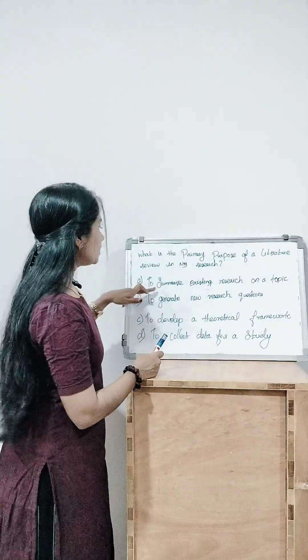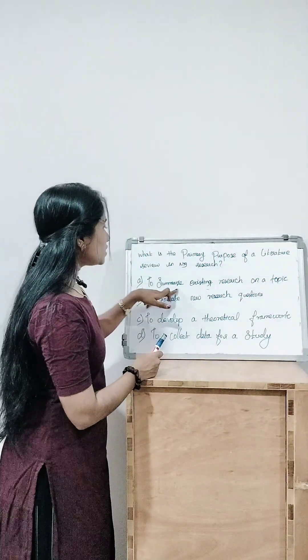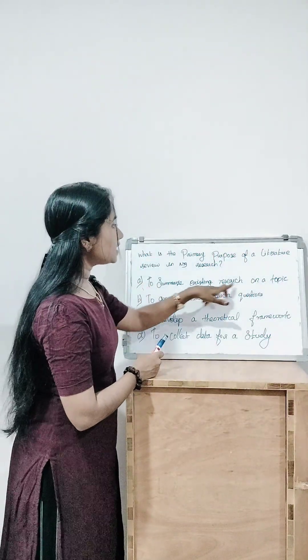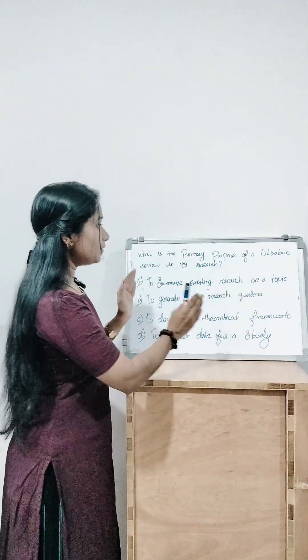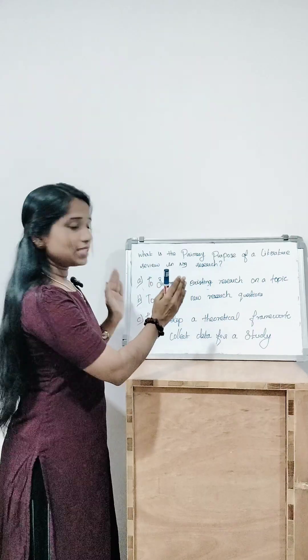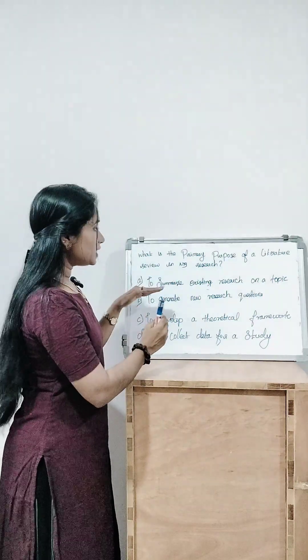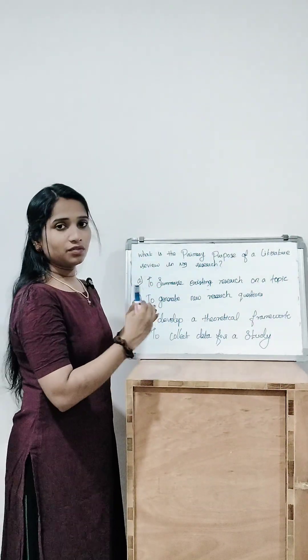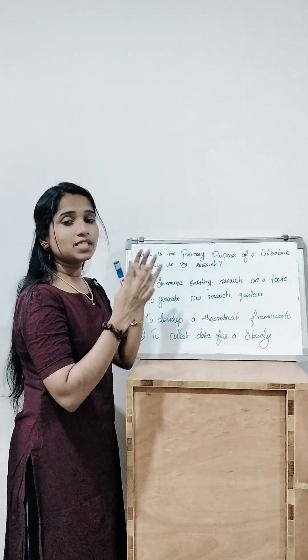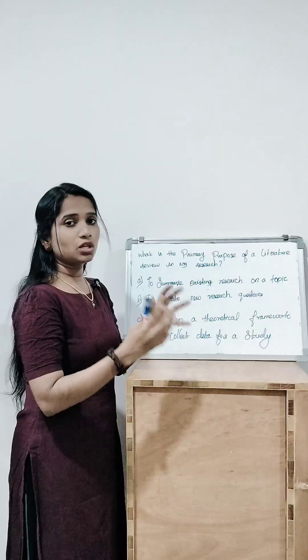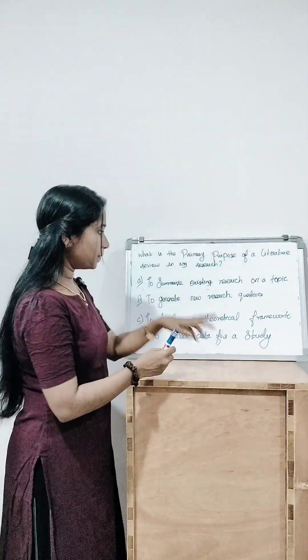Let's look at the options. Option A is to summarize existing research on the topic. We are summarizing the entire research on a particular topic — that is why we review the literature.